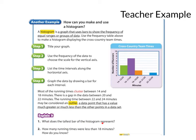What does the tallest bar of the histogram represent? The tallest bar represents that 7 people completed it between 16 and 17 minutes and 59 seconds. How many running times were less than 18 minutes? The answer to that would be I would look at both of these bars. Both of these are less than 18. And so, this one would be 7. And this one would be 4. So, we'd say that 11 people finished below 18 minutes.